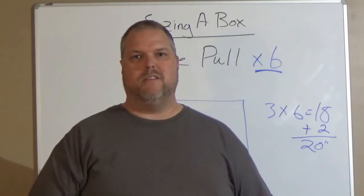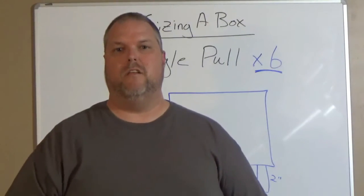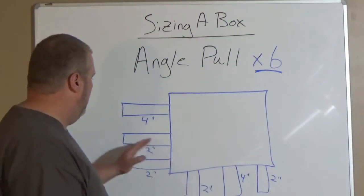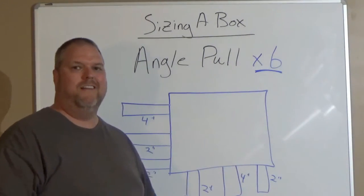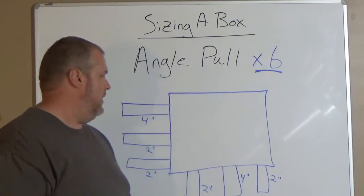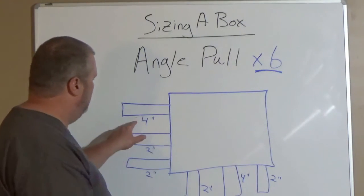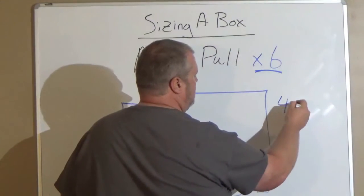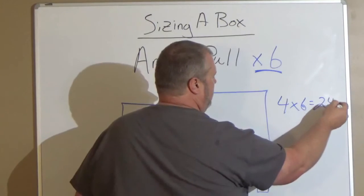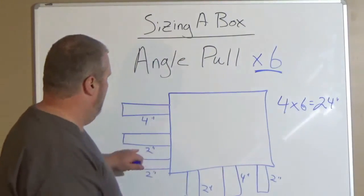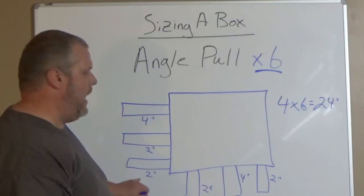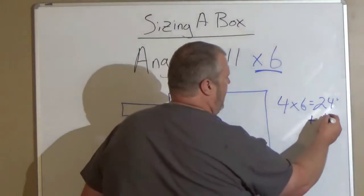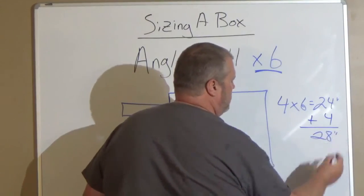Let's do one more example. This example is we have three conduits. So three conduits, we do the same thing. I have a 4-inch conduit. That is my largest conduit on both sides, but we're going to do one side right now. So I'm going to take the 4 and I'm going to multiply that by 6. That's going to give me 24 inches. I have two 2-inch conduits. I'm going to add them together, which will give me 4 inches. I'm going to add the 4 to this, and it's going to give me a 28-inch box.